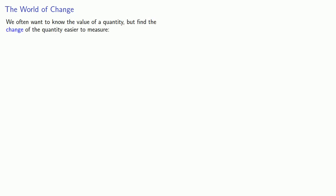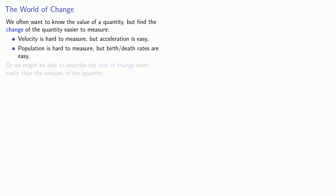We often want to know the value of a quantity, but we find the change of the quantity easier to measure. So velocity is hard to measure, but acceleration is very easy. Population is hard to measure, but birth and death rates are easy. Or we might be able to describe the rate of change more easily than the amount of the quantity.